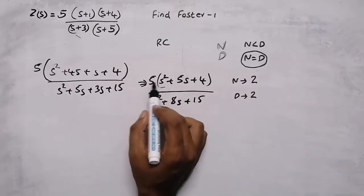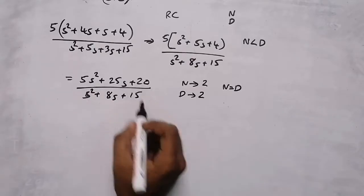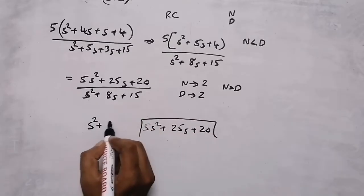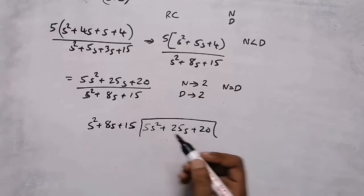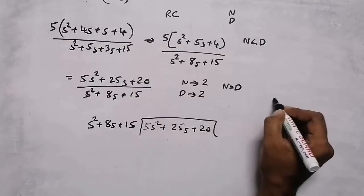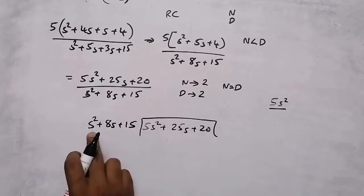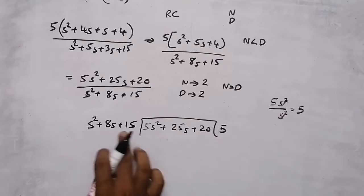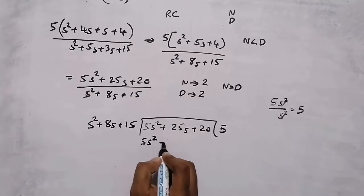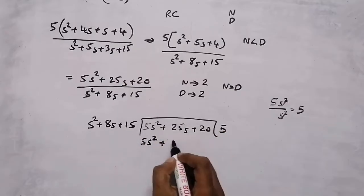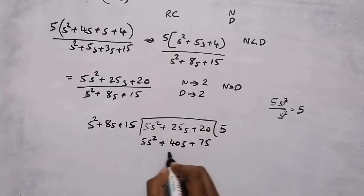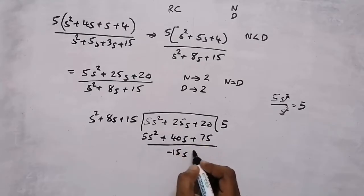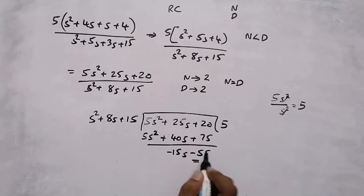For doing long division, the numerator is 5s squared plus 25s plus 20, divided by the denominator s squared plus 8s plus 15. Take the first element 5s squared and divide by s squared to get 5. Multiply 5 by the denominator: 5s squared plus 40s plus 75. Subtracting gives 0 for the s squared term, minus 15s, and minus 55 as the remainder.